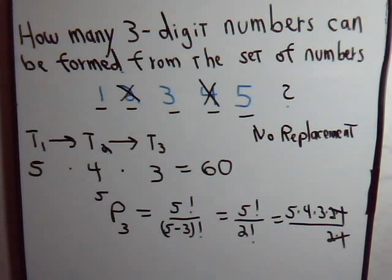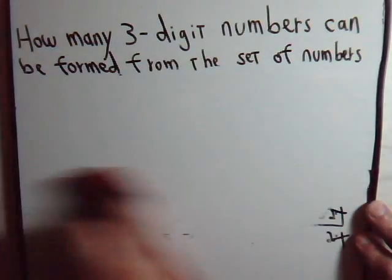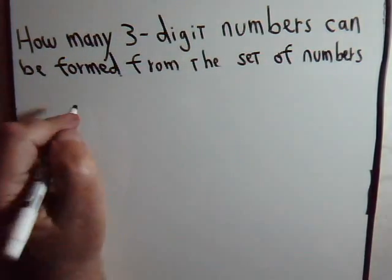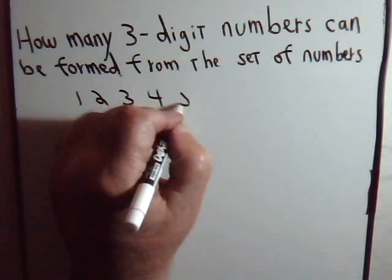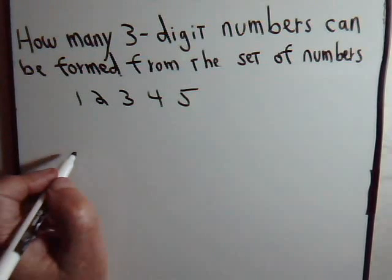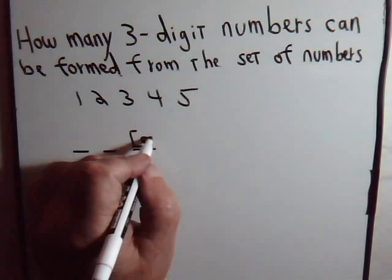So there are sixty different three-digit numbers that we could form from this number group. Now we want to answer the second part of the question. Of these sixty numbers, how many of them will be even? So let's consider that part of the problem. So we have these digits.